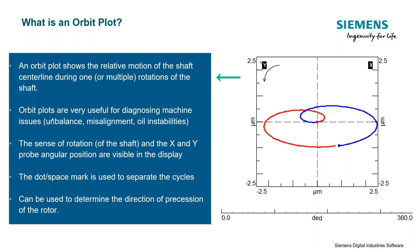An orbit plot shows the relative motion of the shaft center during one or multiple rotations of the shaft. We've got an orbit plot displayed here on the right-hand side of the screen. What you see here is the motion of the center of the shaft through two cycles — blue and red each denote one rotational cycle. This orbit plot gives us a lot of really interesting and useful information for diagnosing machine issues like unbalance, misalignment, or oil instabilities based on the shape of the orbit — diagnosing kind of like a doctor using a stethoscope.